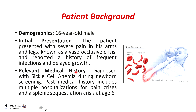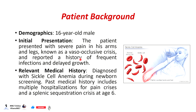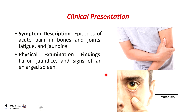The patient is a 16-year-old male. Initial presentations include severe pain in his arms and legs, known as a vaso-occlusive crisis, and a history of frequent infections and delayed growth. He was diagnosed with sickle cell anemia during newborn screening, with past medical history including multiple hospitalizations for pain crises and a splenic sequestration at the age of 6. Symptoms include episodes of acute pain in joints and bones, fatigue, and jaundice.